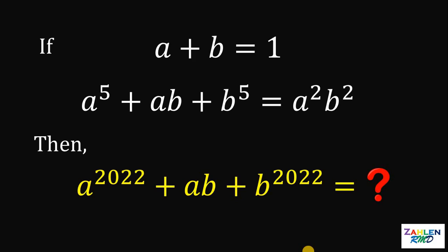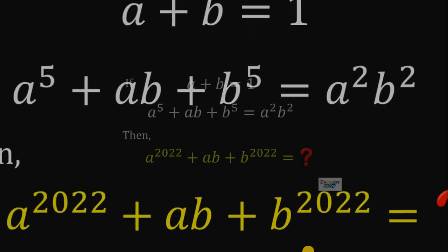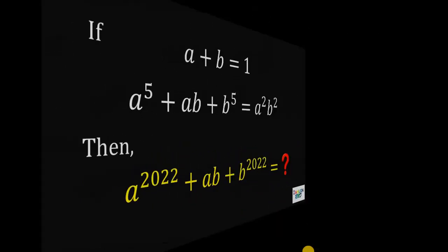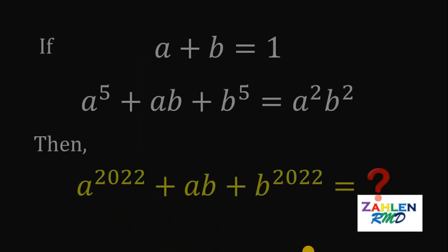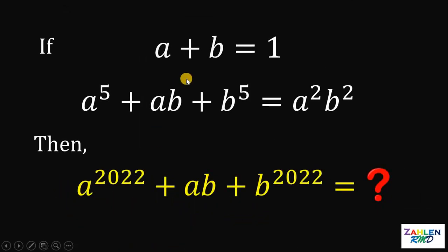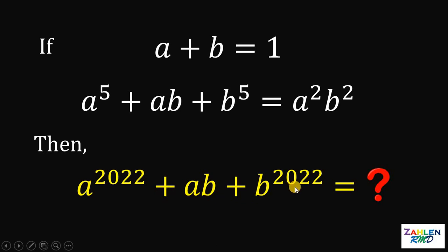Good day everyone, here's our math challenge for today. If a plus b equals 1, and a raised to the fifth power plus ab plus b raised to the fifth power equals a squared times b squared, then what is the value of a raised to 2022 plus ab plus b raised to 2022?